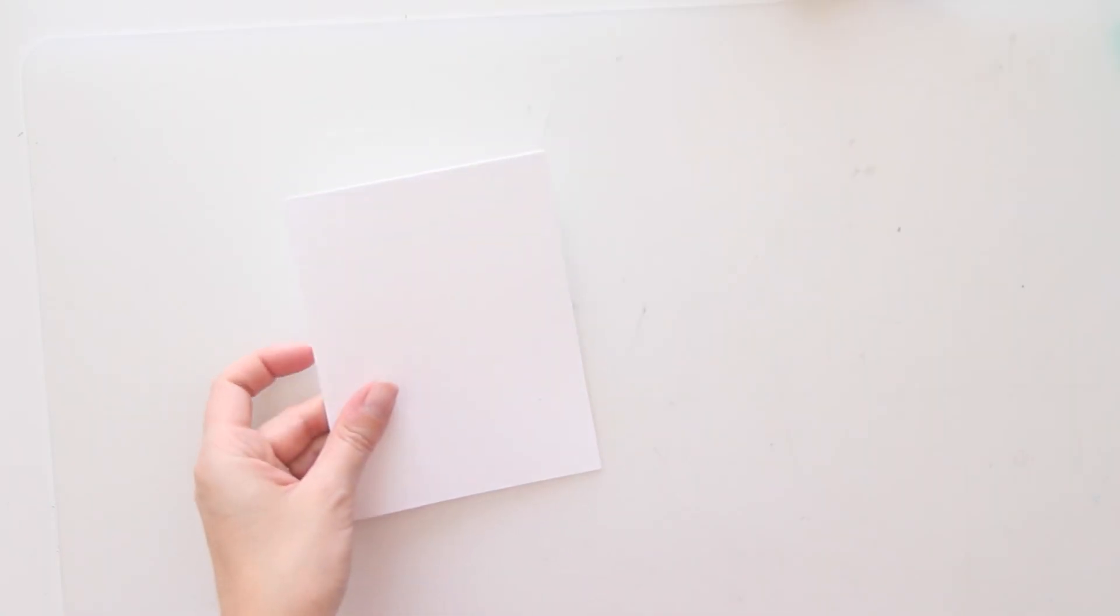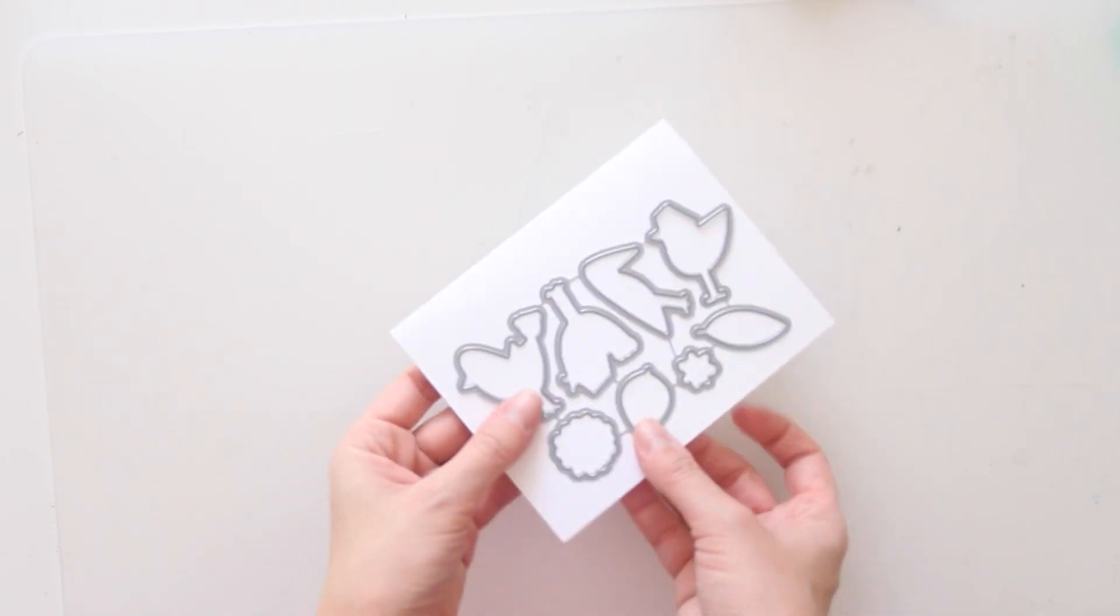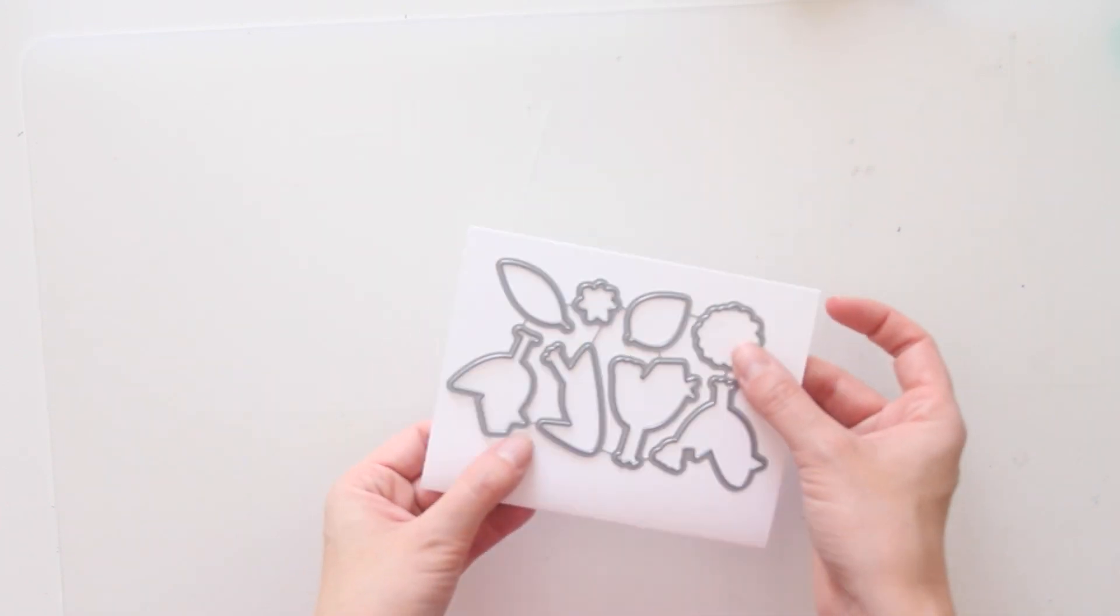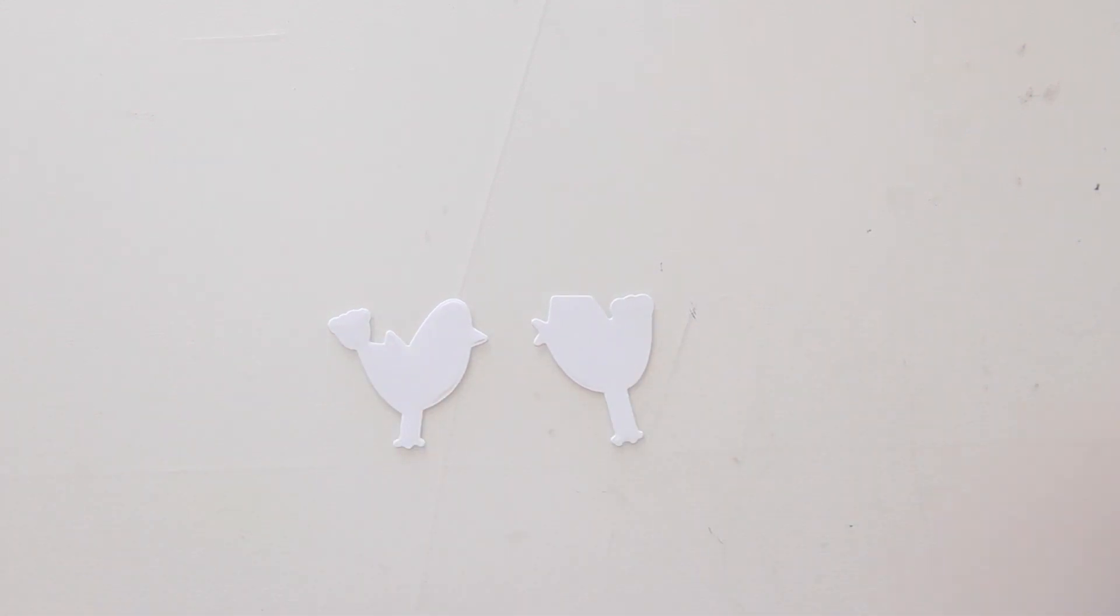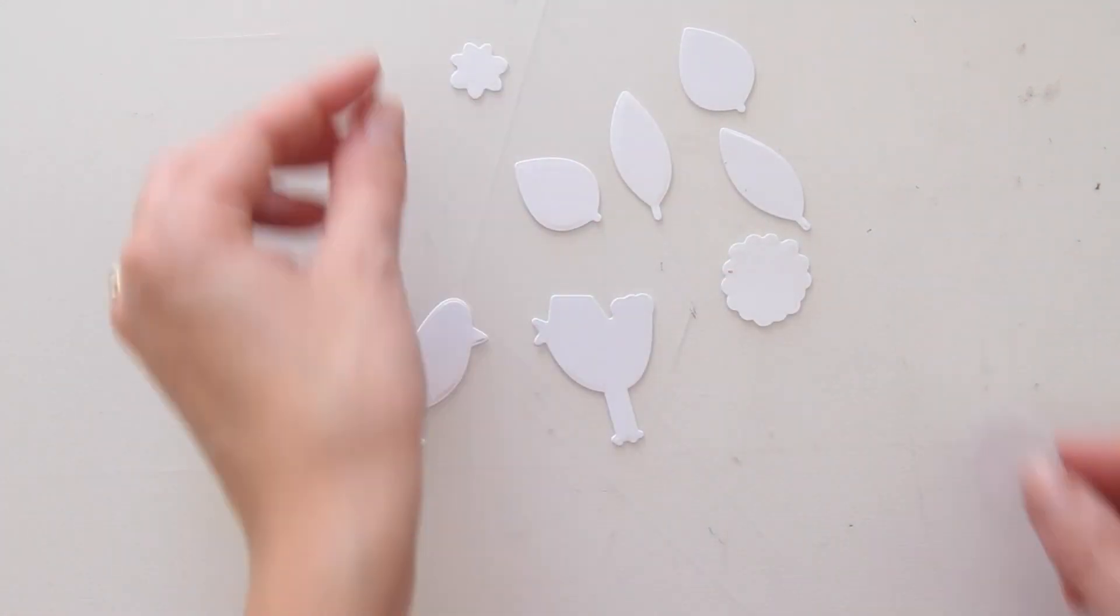First, I'm going to die cut all of the shapes in the die set out of white cardstock, and I ran it through my die cutting machine twice just to get some extra flowers and leaves. I knew I wanted to use just two of the birds in the set, so I only die cut the ones I was going to use.